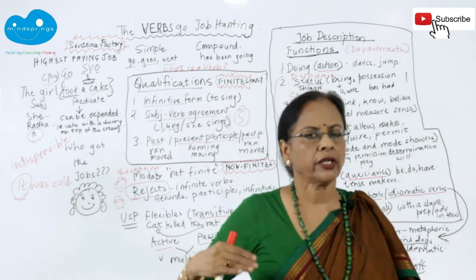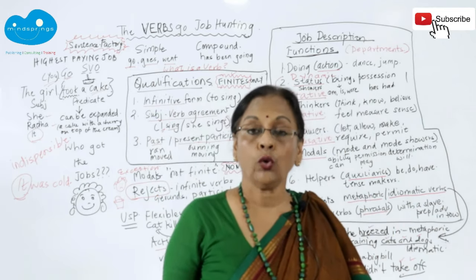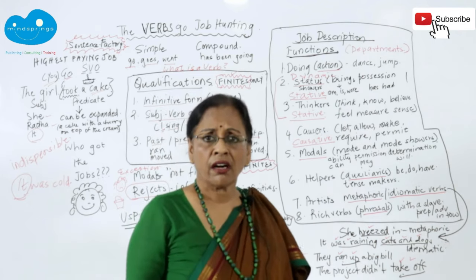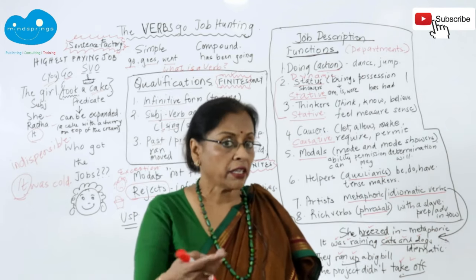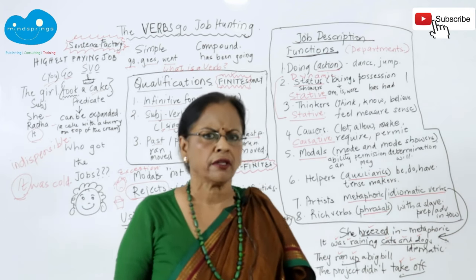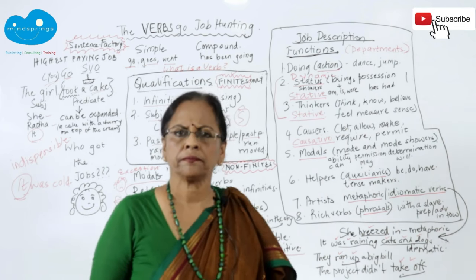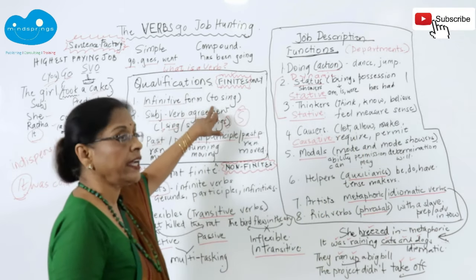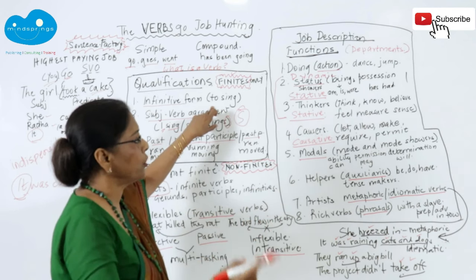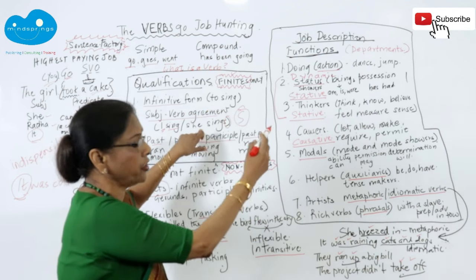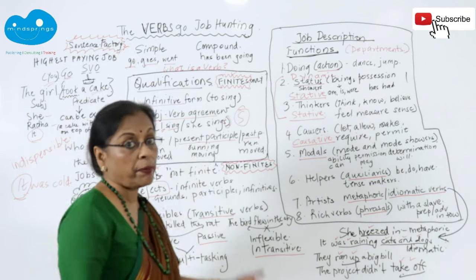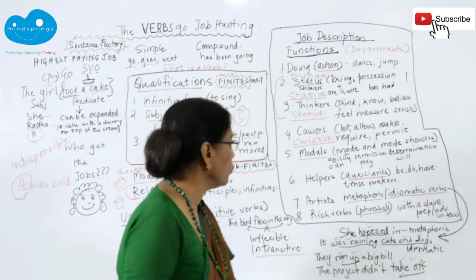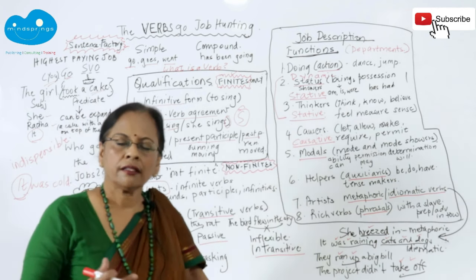Stative verbs have two kinds: verbs of being and having, and verbs of thinking. 'I know, I think, I believe, I understand, I feel, I sense, I see, I hear, I measure, I weigh' — all very important. The judges tested them: 'to be, to have, to know, to think — yes. Knowing, thinking, measuring, feeling — yes. I felt, I understood — excellent.' They passed and were sent to the thinking room.